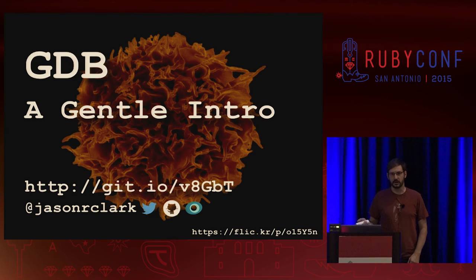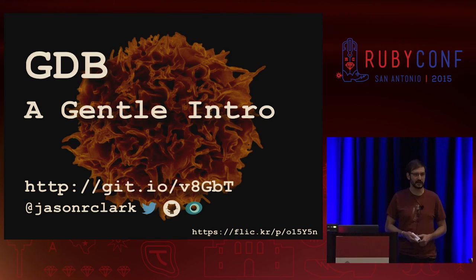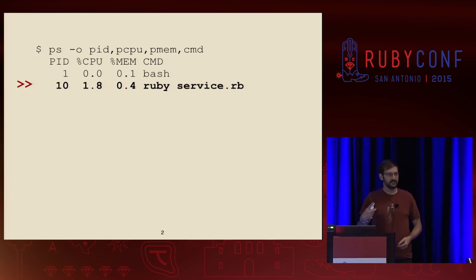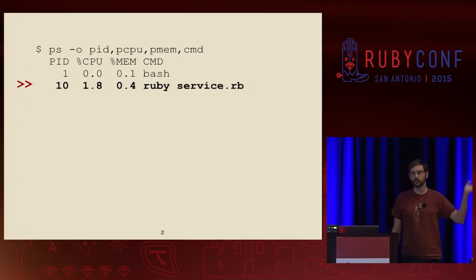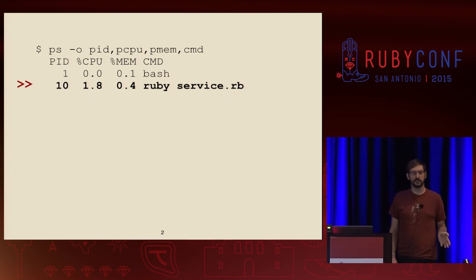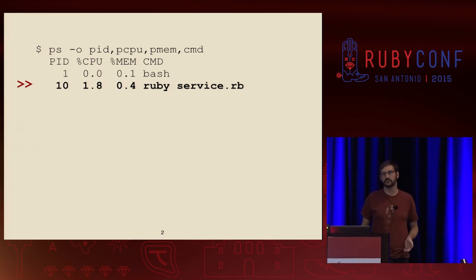So I'm going to start off — this talk is sectioned into a couple of different examples you may be able to relate to. The first one is: has anyone here ever had a process? They've got some Ruby program that's running, and it's stopped. It's still running, it's still there, but it's not doing what it's supposed to do. It's deadlocked in some fashion, hung up somewhere, and you don't really know what's going on.